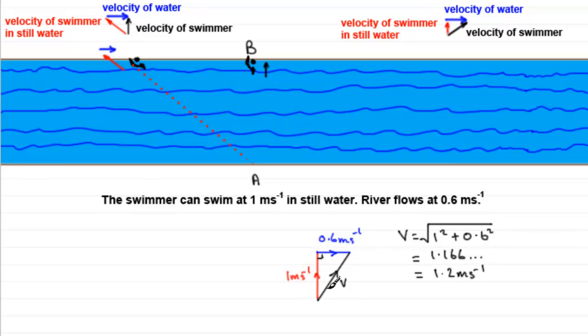And when it comes to the angle, the angle made with the direction AB, we'll call that angle theta. Then, what would theta be? Well, we can do that from trigonometry. This would be the opposite side, this would be the adjacent side to theta, so it would be tan theta equals 0.6 over 1. And so, theta would be then the inverse tan of 0.6 divided by 1.